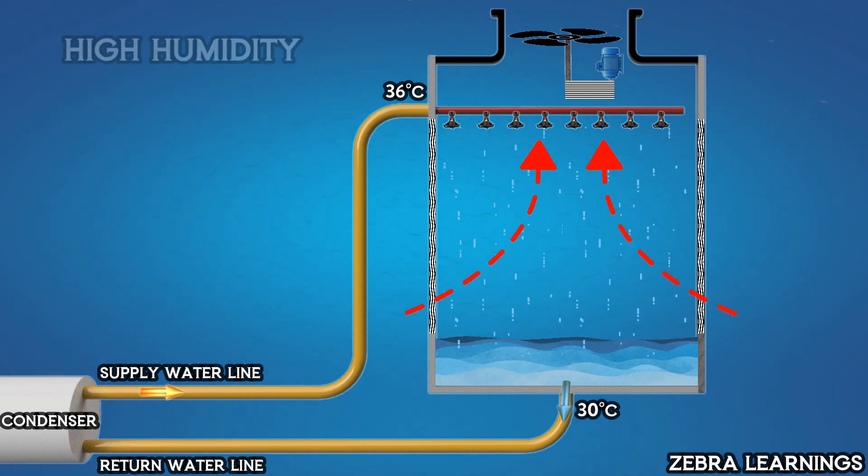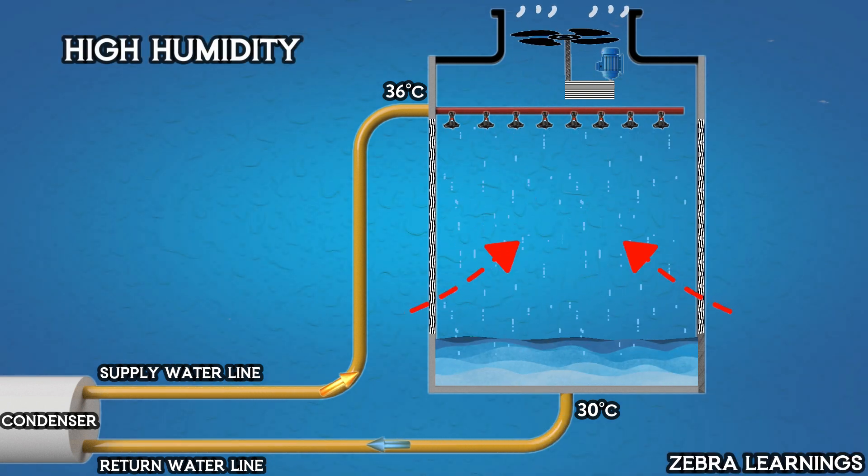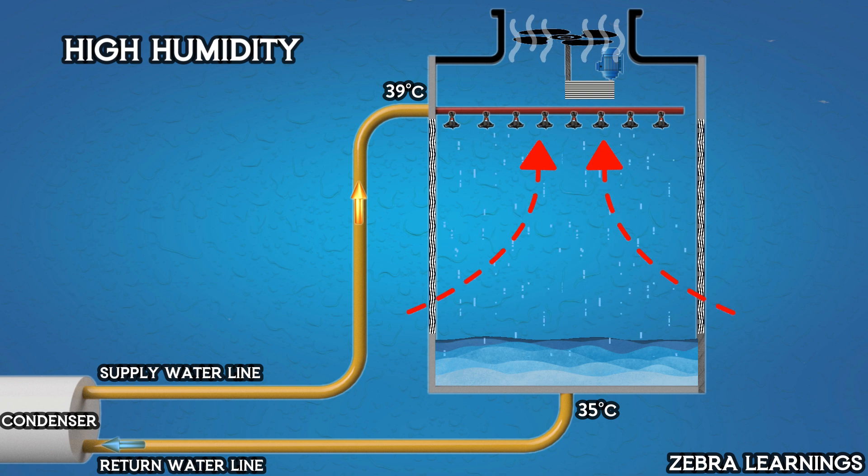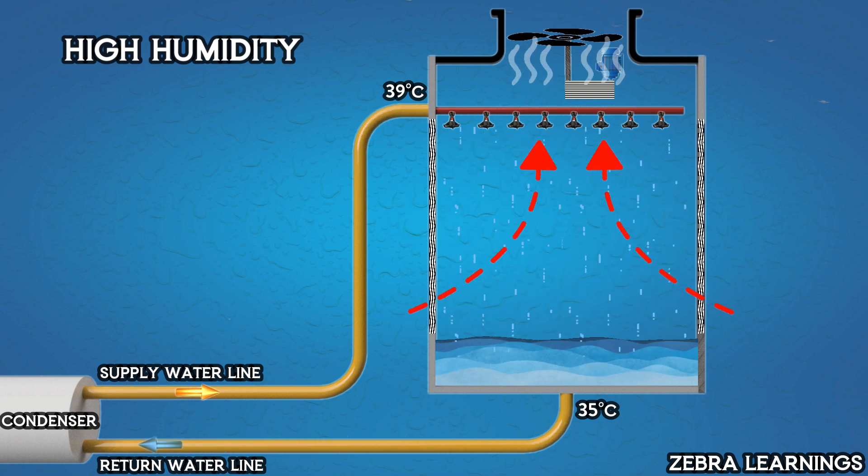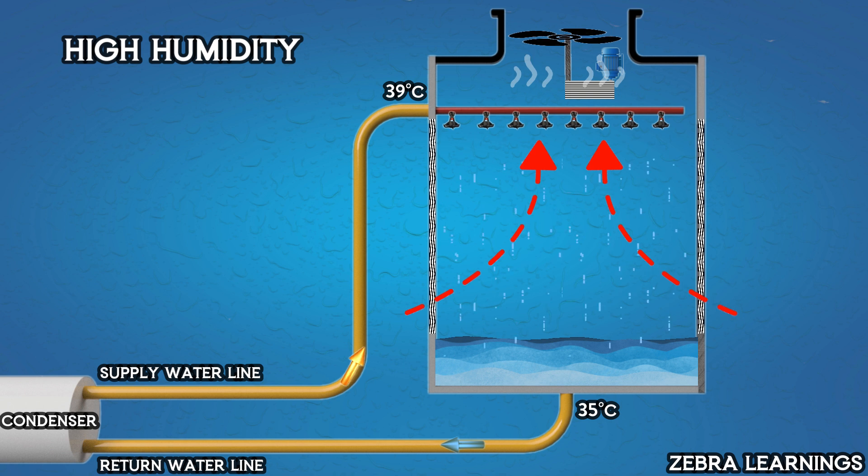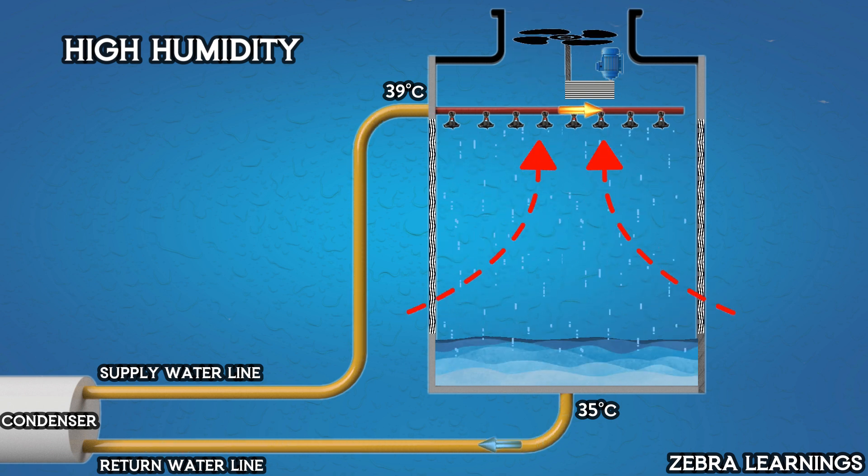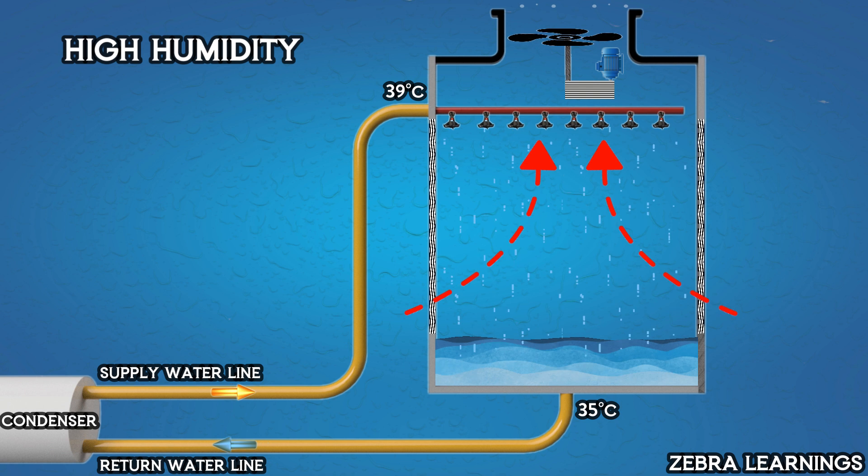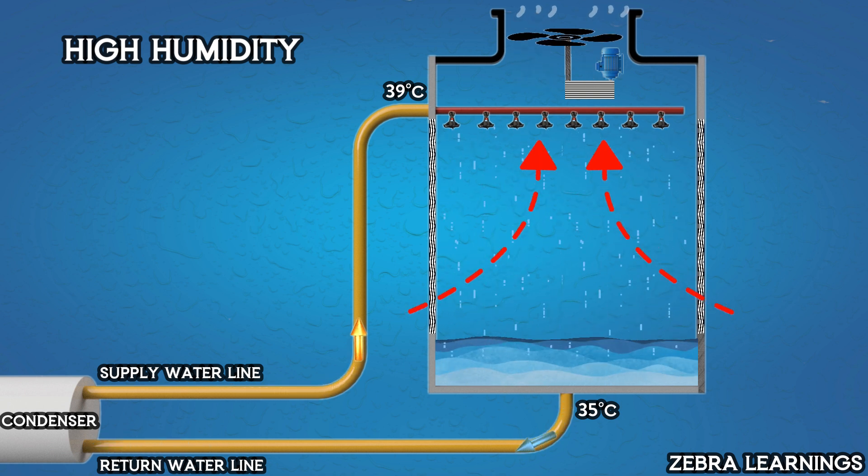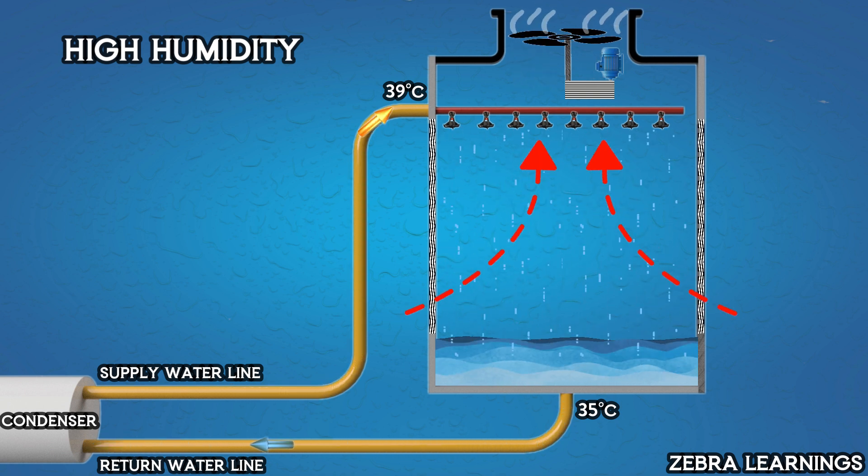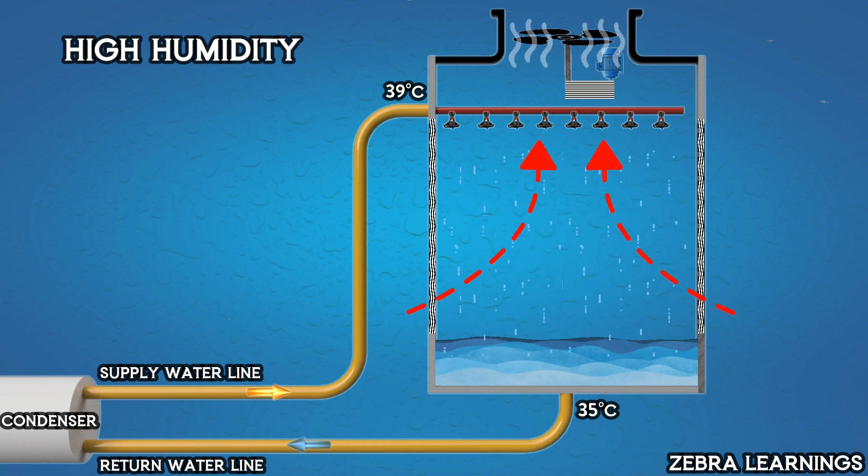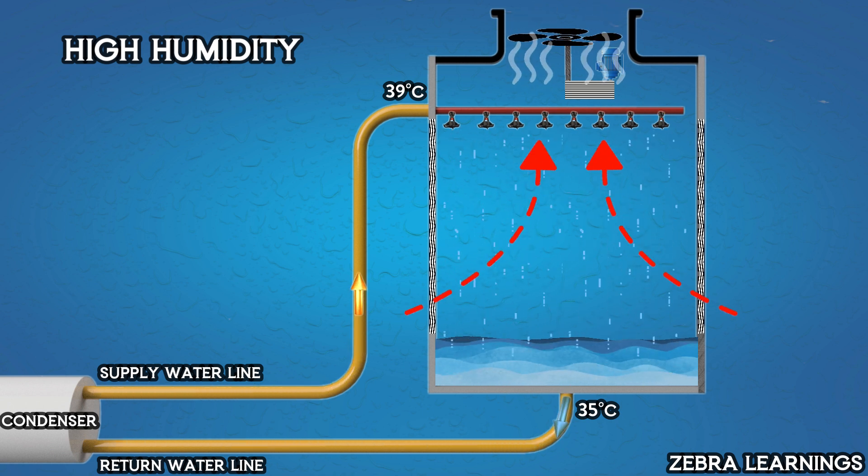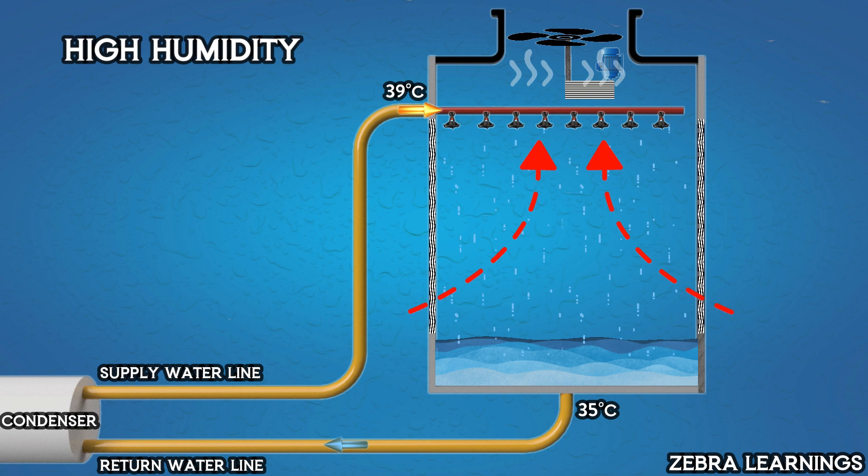However, when the humidity level is high, only less water evaporates from the cooling tower, and the water returning to the chiller is not cooled as effectively. This reduces the cooling tower's efficiency. Since the water entering the condenser is at a higher temperature due to the high humidity, it cannot cool the refrigerant as effectively. This leads to an increased load on the chiller. This is how high humidity affects the overall process of a chiller plant.